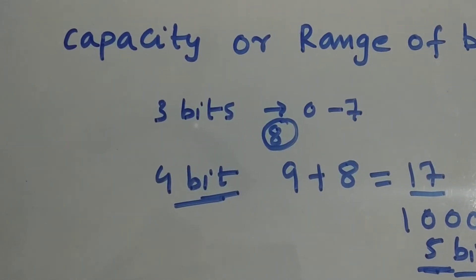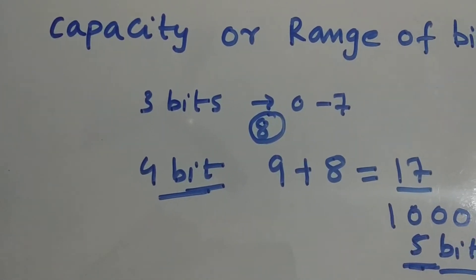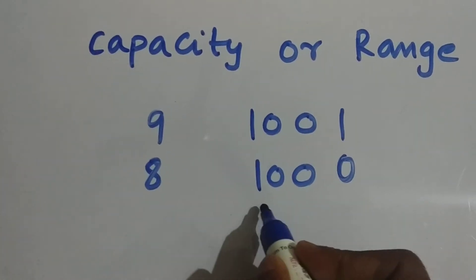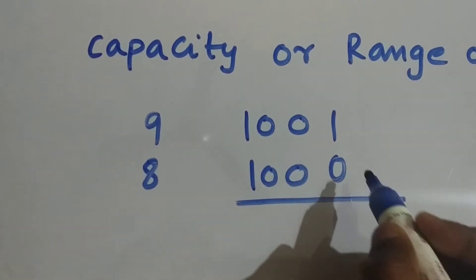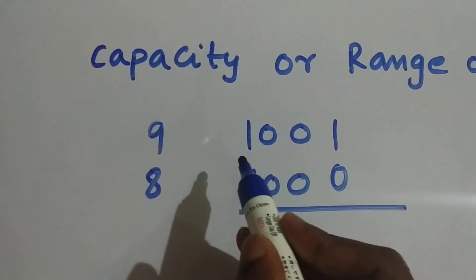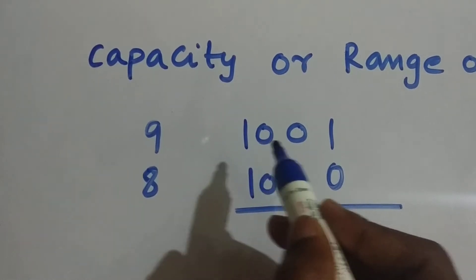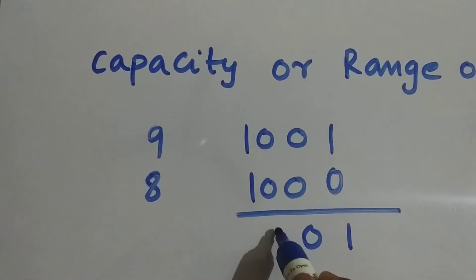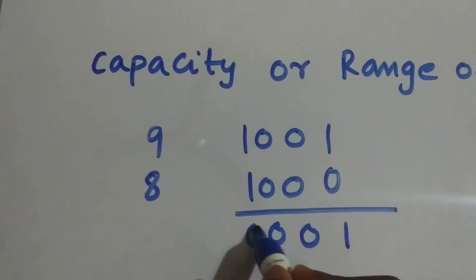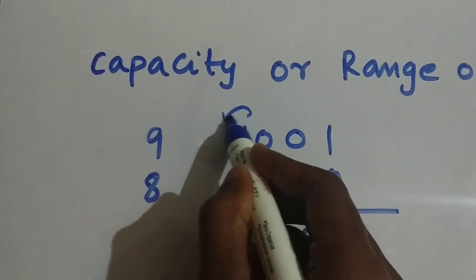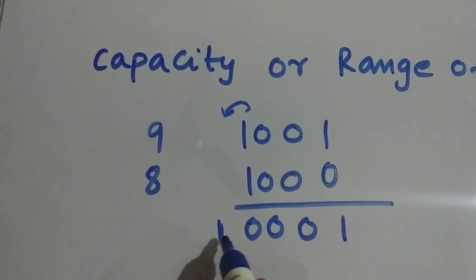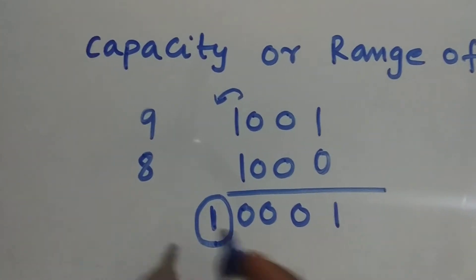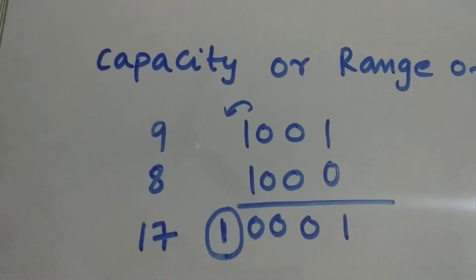Let's take the same example, nine plus eight, and add them in binary form. Nine and eight are each represented using four bits. When we add them, we get one-zero-zero-zero with a carry of one. That carry produces an extra bit, which results in an overflow — seventeen cannot be represented in four bits.